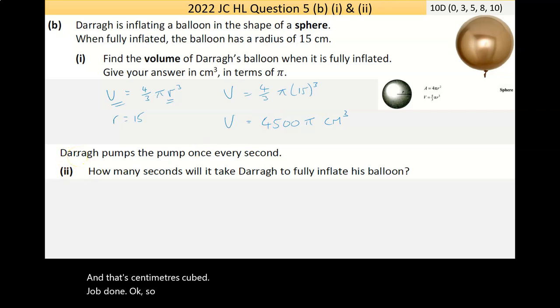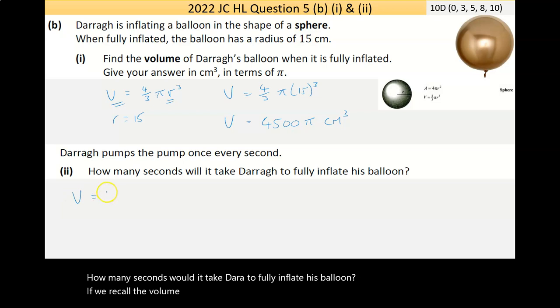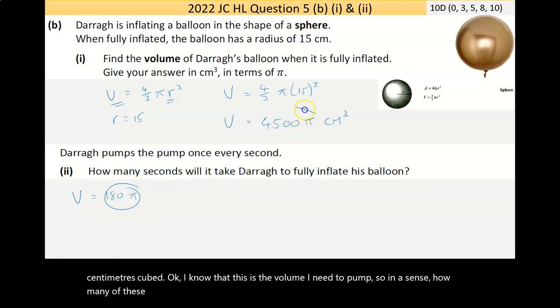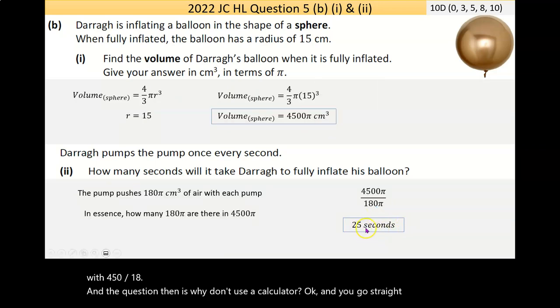Next bit's a bit harder. Dara pumps the pump once every second. How many seconds would it take Dara to fully inflate his balloon? The volume of air pumped was 180 pi centimeters cubed. I know that this is the volume I need to pump. In a sense, how many of these are there in this? That's division. So it's 4500 pi over 180 pi. The pi's will cancel, one of the zeros will cancel. I'm left with 450 over 18. Why not use a calculator? You'll go straight to your answer of 25 seconds.